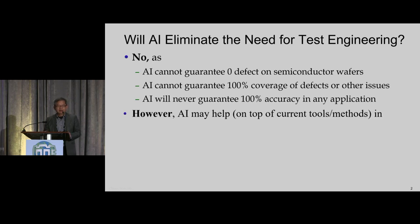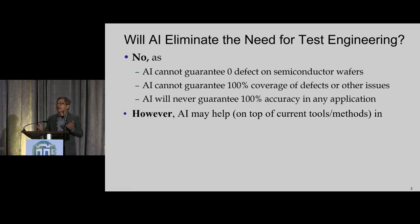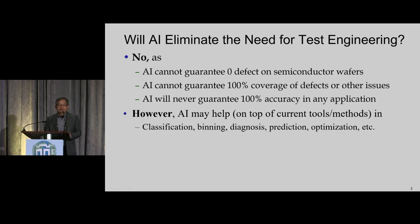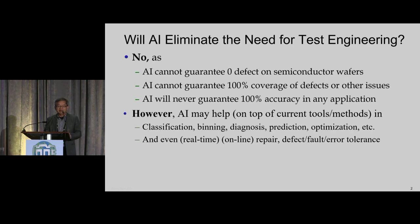However, AI can be a tool in your toolbox to improve performance. As several keynote speakers have talked about, in many applications AI can help human beings improve performance — in classification, binning, diagnosis, prediction, optimization, and even in the future in real-time online repair and defect or error tolerance. Because of that, R&D reinvestment by governments all over the world gives us some hope. There's an arms race in AI — in China, in the U.S. — and even in Taiwan our government has decided to spend significant funding in AI research.